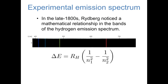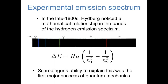First, I'd like to remind us of some of the historical context. As we said in the first couple videos of this course, the emission spectra of atoms were one of the experimental observations that led to the development of quantum mechanics. In the late 1800s, Rydberg noticed a mathematical relationship in the bands of a hydrogen emission spectrum. The energy difference between two energy levels is equal to an experimental constant — the Rydberg constant — times 1 over the quantum number of each energy level squared. At the time, this was just an experimental observation, rationalized with the Bohr model by saying electrons were in quantized orbits, but the fundamental physics wasn't known. It was the ability of the Schrödinger equation to explain these energy levels that was really the first major success of quantum mechanics, and that's what we'll be talking about in this video.